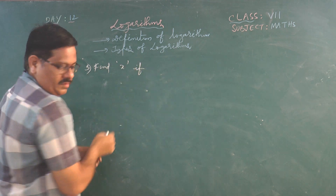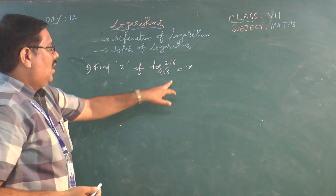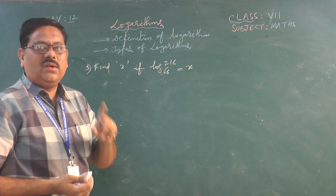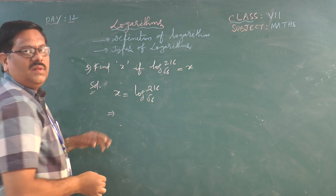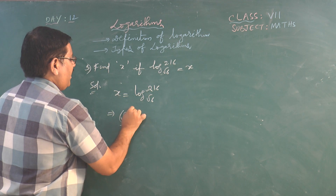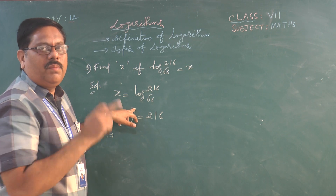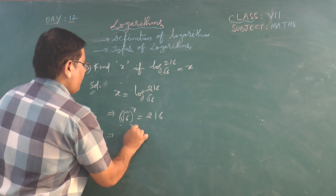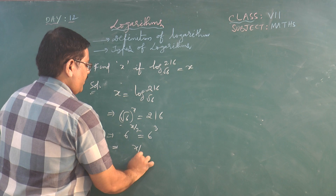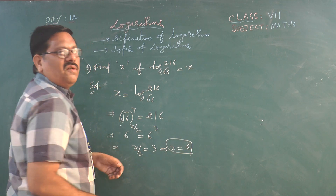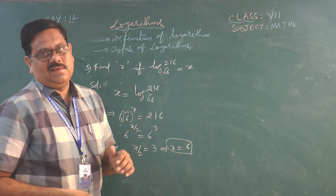Example: Find x if log_√6(216) = x. Starting with x = log_√6(216), by definition (√6)^x = 216. Writing √6 as 6^(1/2), we get 6^(x/2) = 216 = 6^3. Since the bases are equal, x/2 = 3, therefore x = 6. So log_√6(216) = 6.